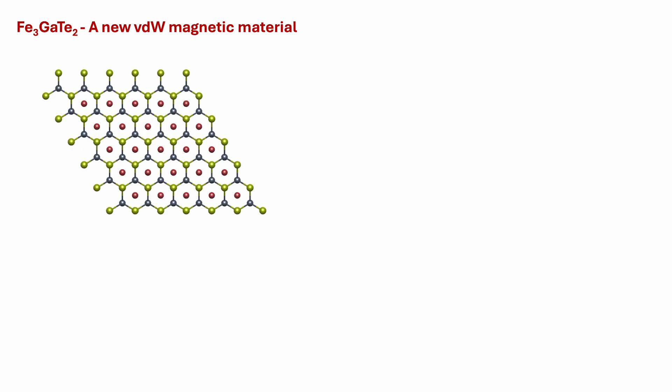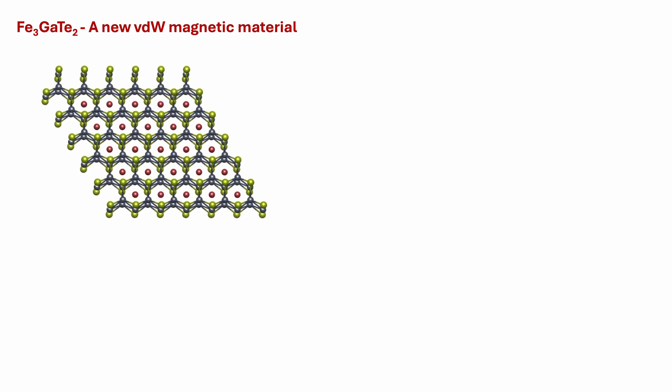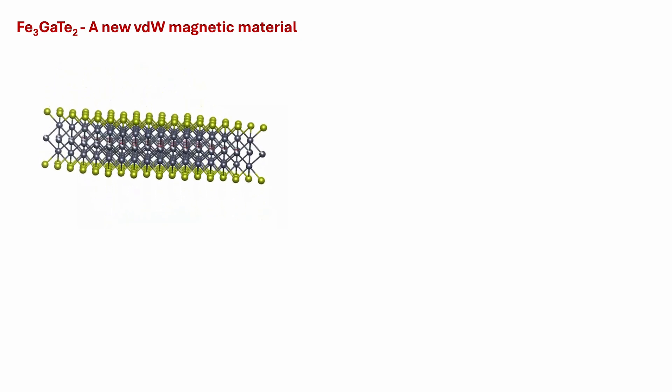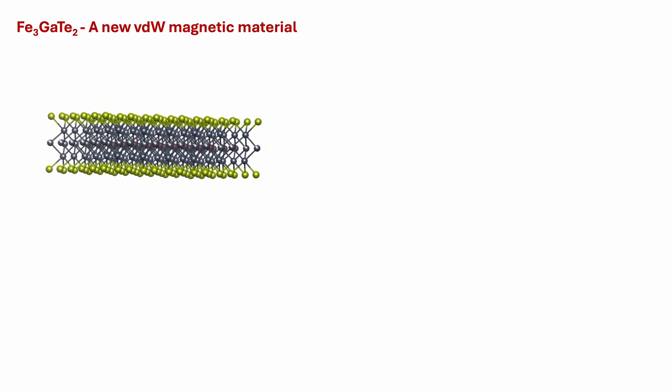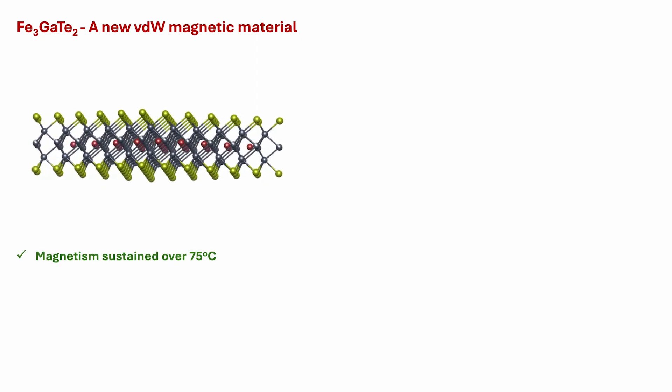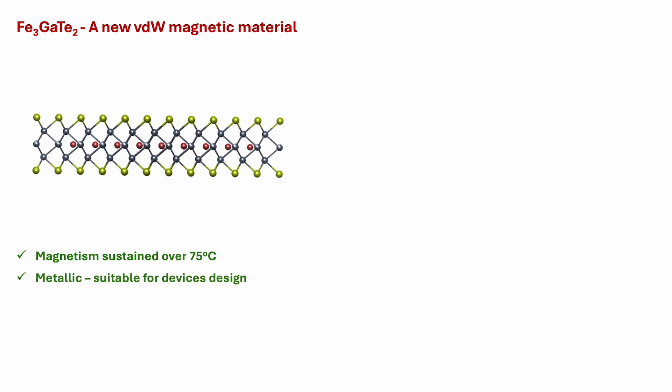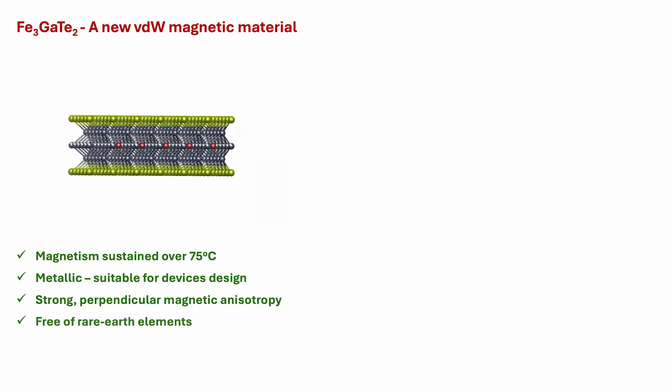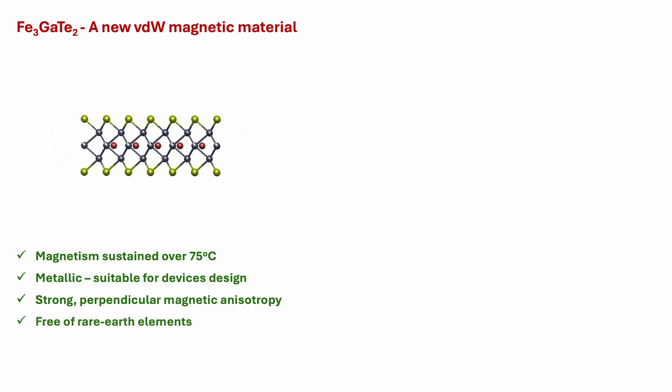To solve this issue, we have grown a new Van der Waals ferromagnet, iron gallium telluride, which offers a uniquely favorable set of properties for building spintronic devices. It sustains magnetism over 75 degrees Celsius, is metallic, exhibits a strong perpendicular magnetic anisotropy and is free of rare earth elements, providing an ideal platform for designing room temperature 2D spintronic devices.